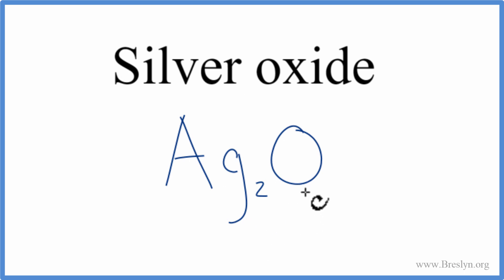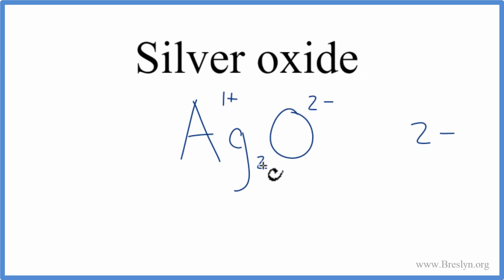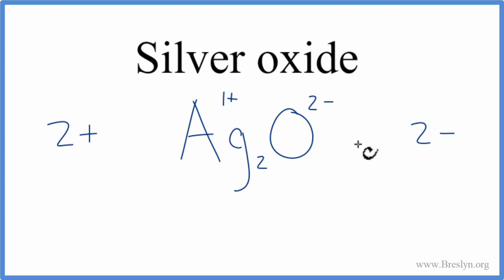We should check our work. We know that silver was 1+ and oxygen was 2-, so we have one oxygen — that's 2- — and then we have two silvers, each one is 1+, so that's 2+. So 2+ and 2- cancel out, giving us a net charge of 0. That makes this the correct formula for silver oxide. This is Dr. B, and thanks for watching.